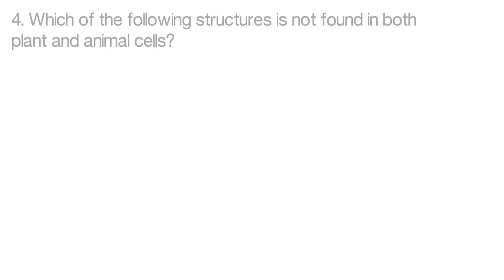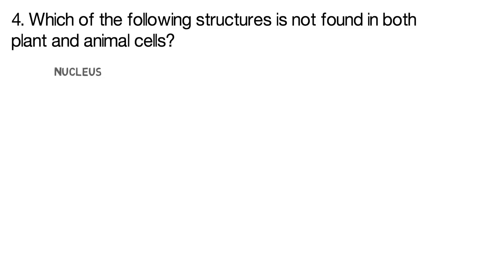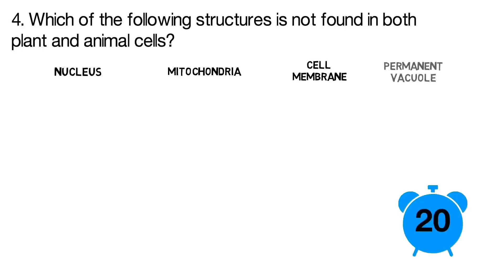Question number four. Which of the following structures is not found in both plant and animal cells? Is it the nucleus? Is it the mitochondria? Is it the cell membrane? Or is it a permanent vacuole?